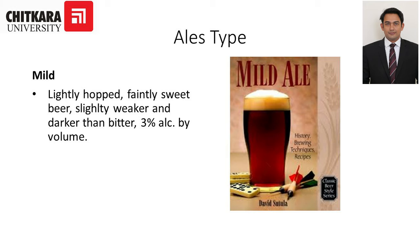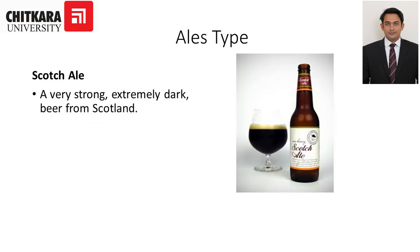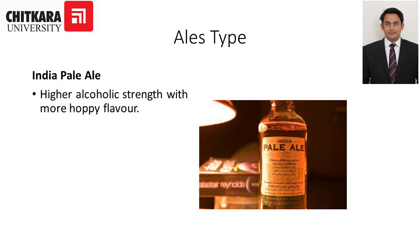Mild beer has 3% alcohol by volume. Then stout — a very dark beer made with a very high proportion of malt and hops. The world-famous stout beer is Guinness, which is a beer from Ireland and one of the most famous beers in the world. Next we have scotch ale — a very strong, extremely dark beer from Scotland. Porter is a very famous beer amongst the porters of Dublin and London, brewed from charred malt. And then Indian pale ale has higher alcoholic strength with a more hoppy flavor.